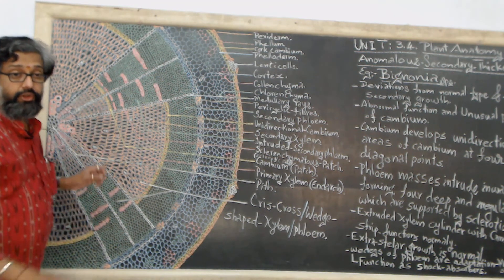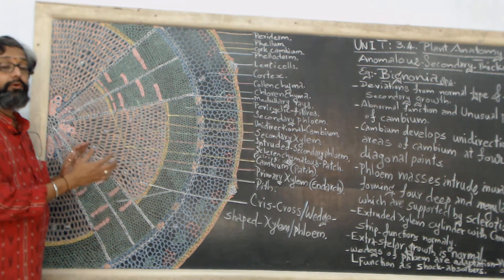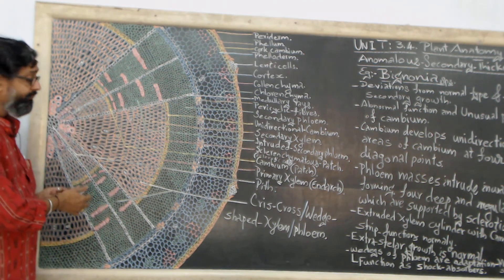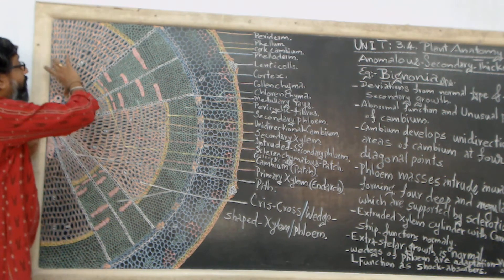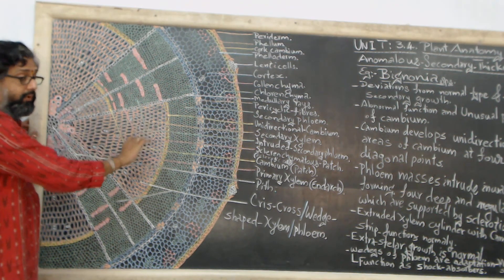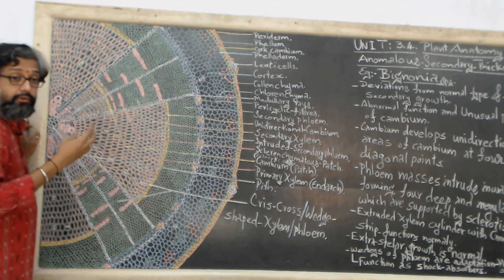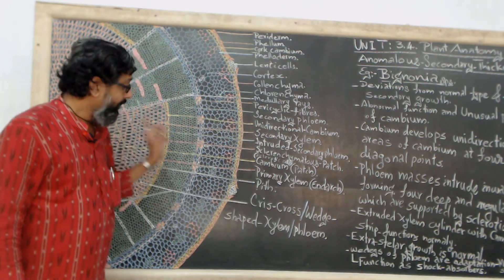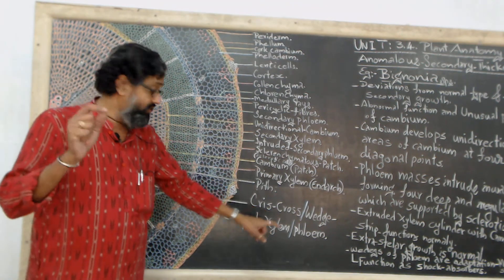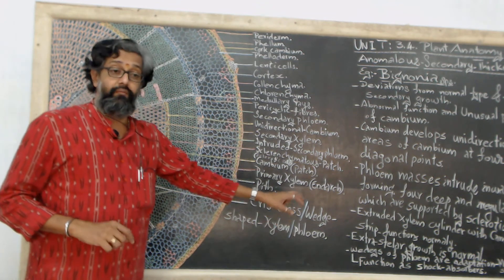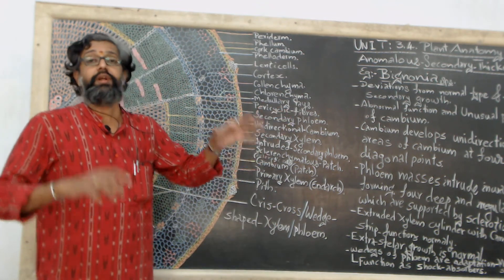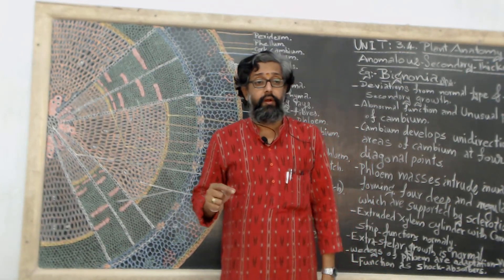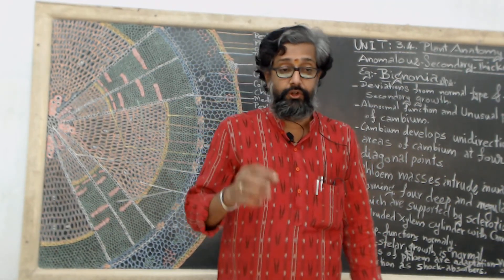Ultimately, at the anatomical microsection level of this Bignonia species, we can see that four quarters show extruded secondary xylem and four quarters show intruded masses of phloem. This pattern of arrangement of xylem and phloem, or vascular elements, is named as criss-cross or wedge-shaped arrangement — criss-cross wedge-shaped xylem and phloem. This is the characteristic nature of the anatomical features in the anomalous secondary thickening exhibited in Bignonia species. Thank you.